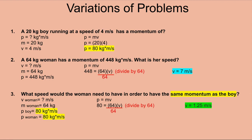Problem two: a 64 kg woman has a momentum of 448 kg·m/s — what is her speed? We're solving for velocity. Mass is 64 kg, momentum is 448 kg·m/s. Using p equals mv: 448 = 64v. Dividing both sides by 64, velocity equals 7 m/s.